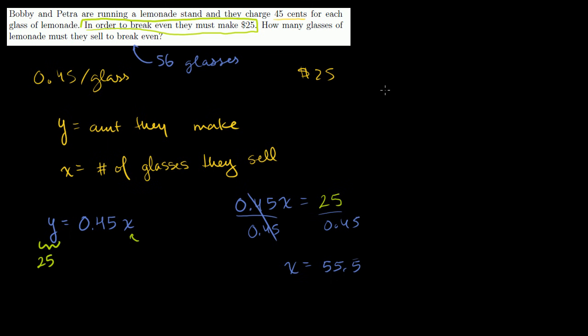And just to graph this, once again, we'll hang out in the first quadrant, because everything is going to be positive. Every glass, they make $0.45. So let's say that they sell, so this is the number of glasses, x, this is how much they make. Let me go by increments of 5.